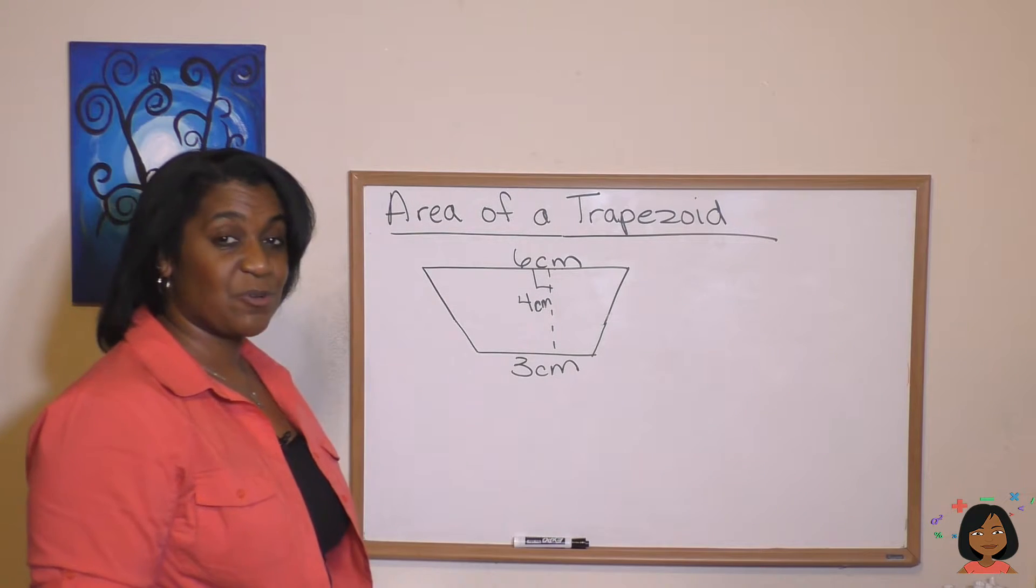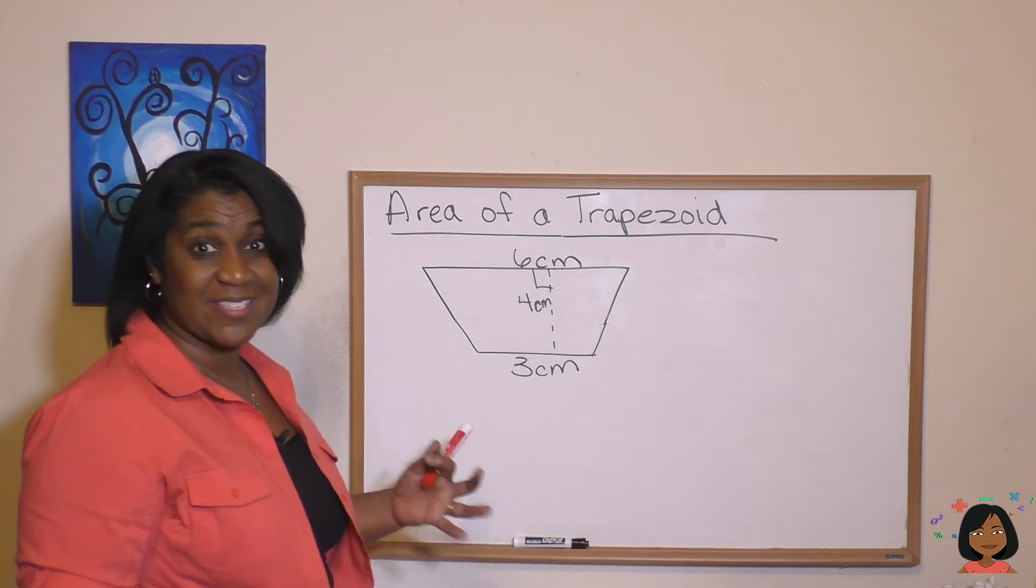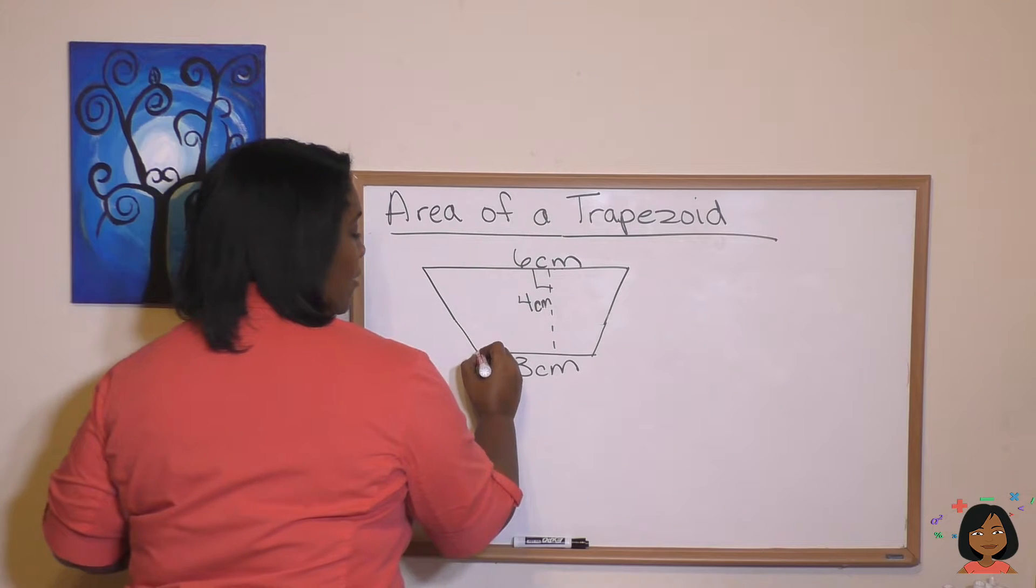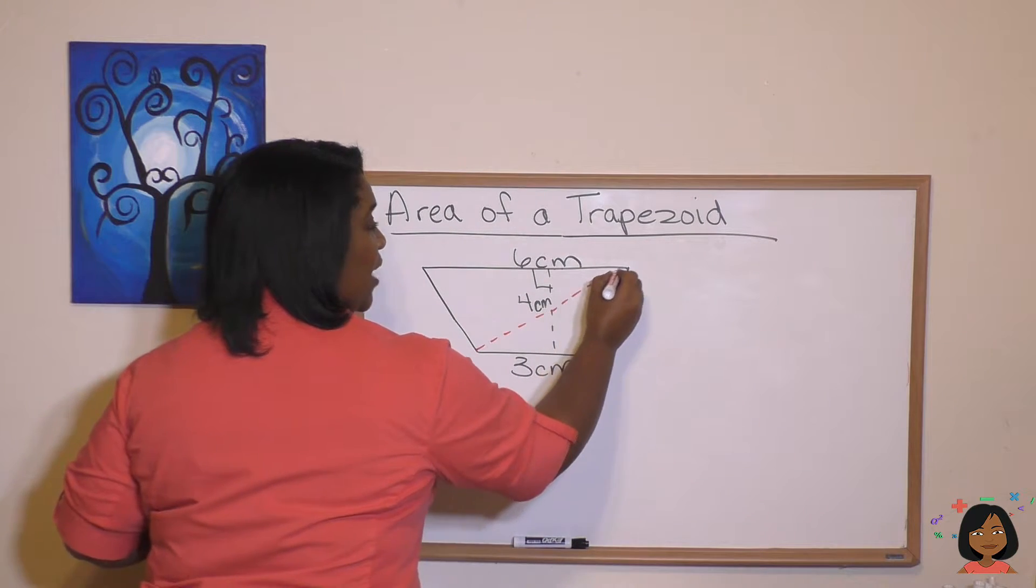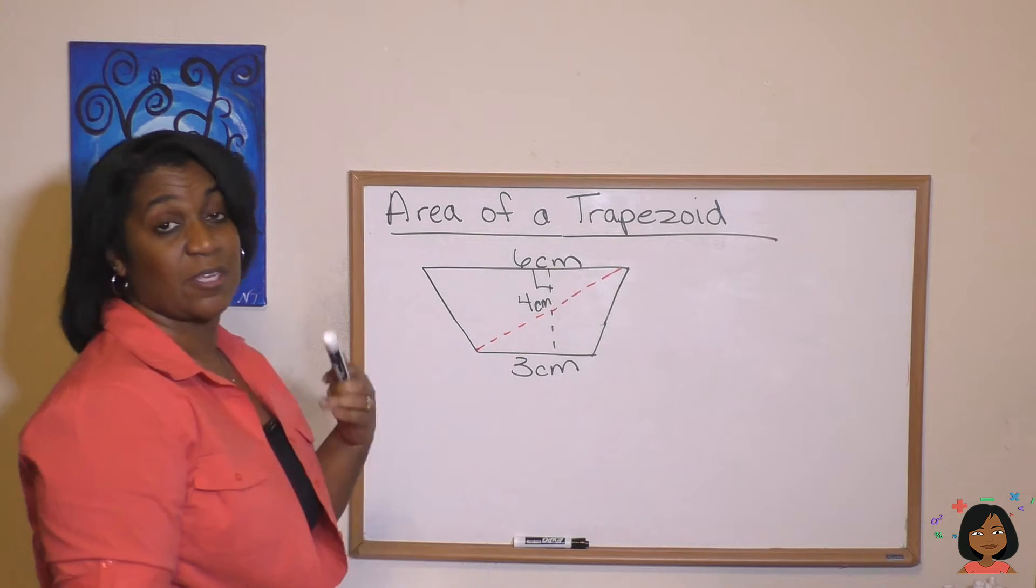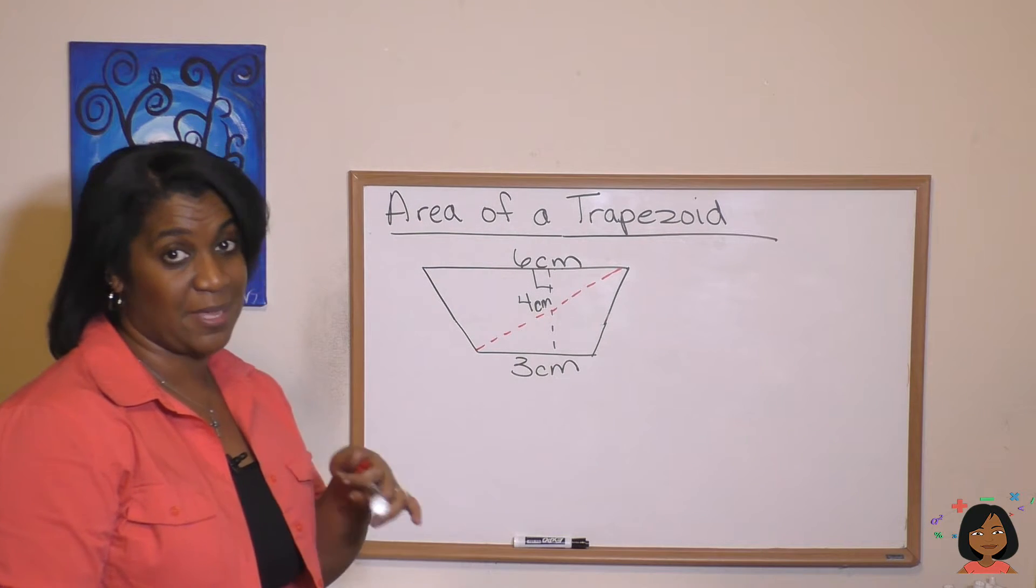Take a look at this trapezoid. What are we going to do? The same thing. We're going to divide this into two triangles. And it doesn't matter, by the way, which diagonal you choose. You can do it this way or you can do it this way. It'll still give you two triangles with two different bases.